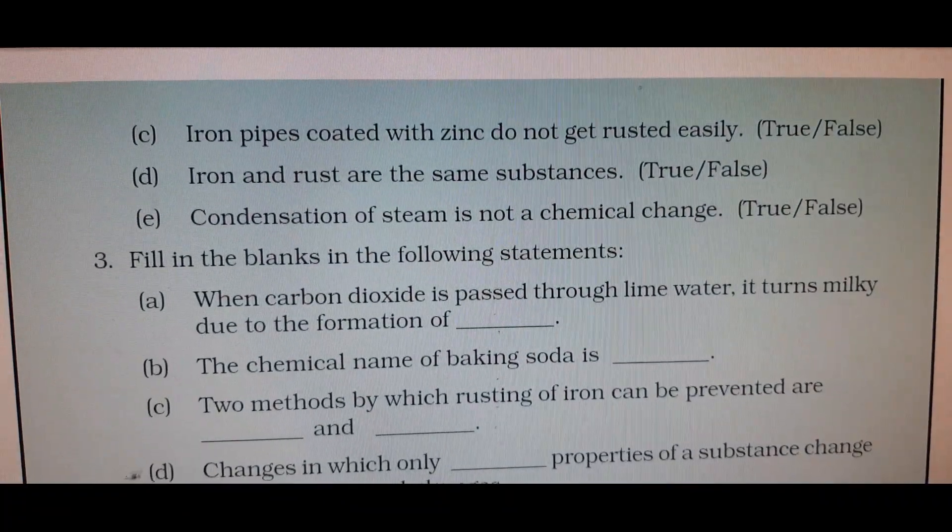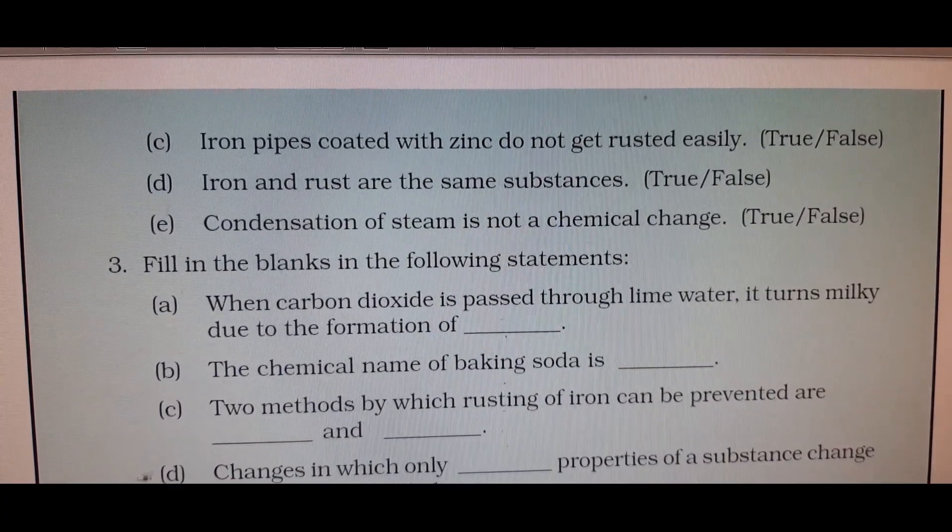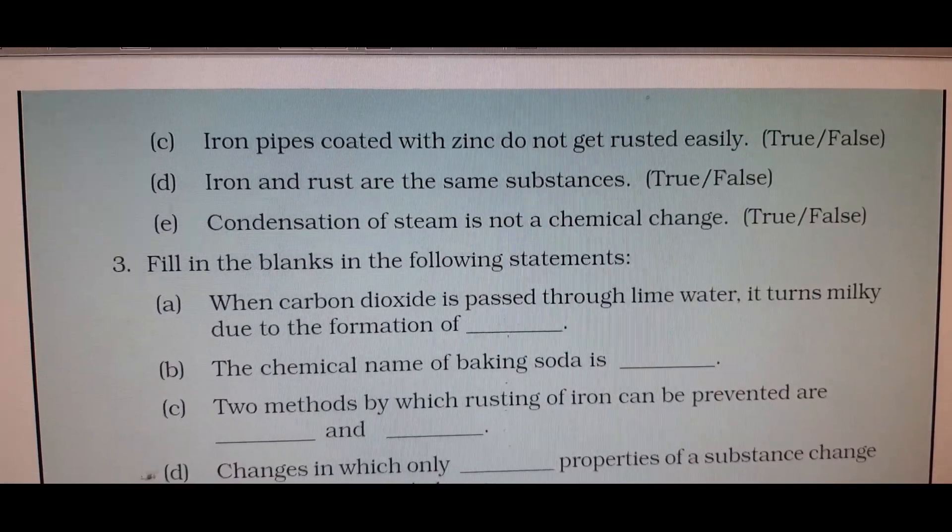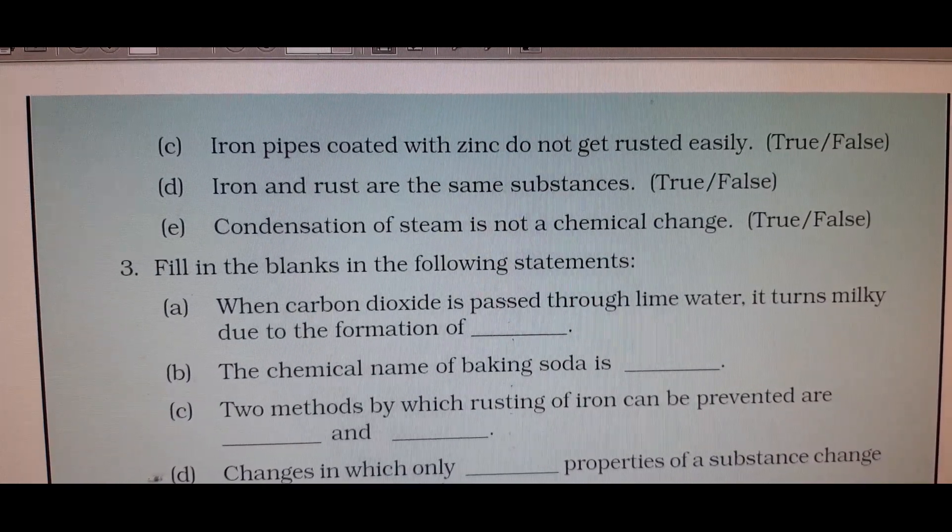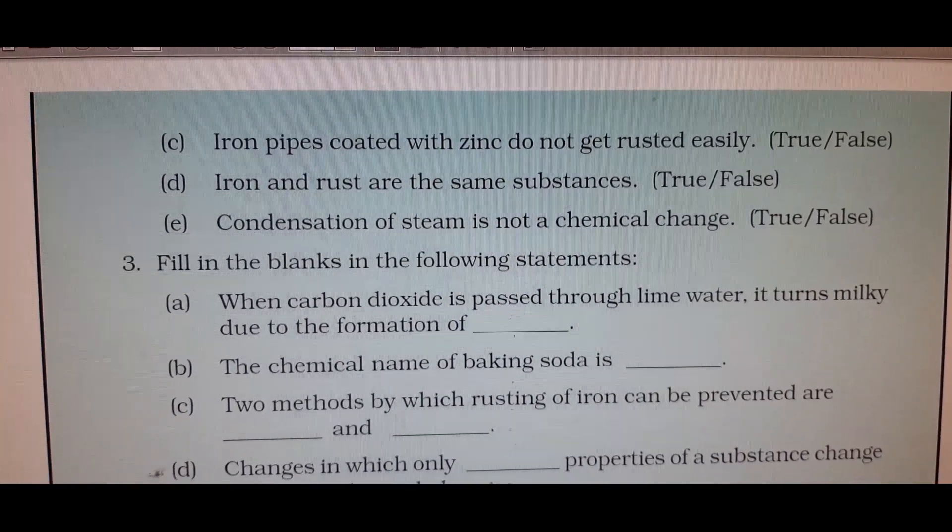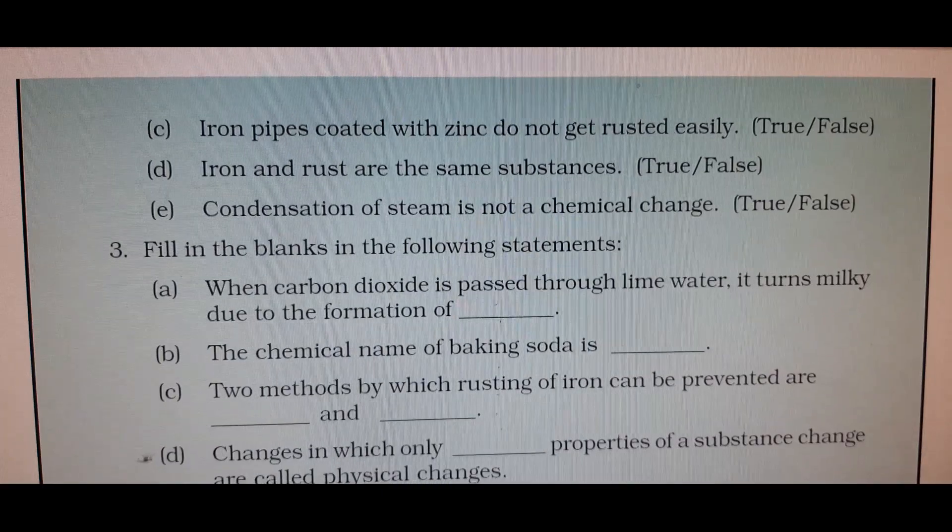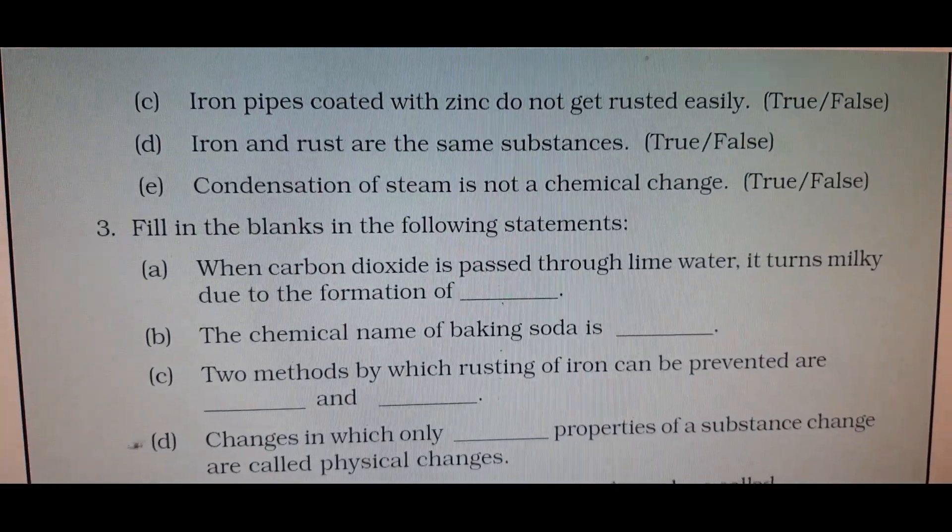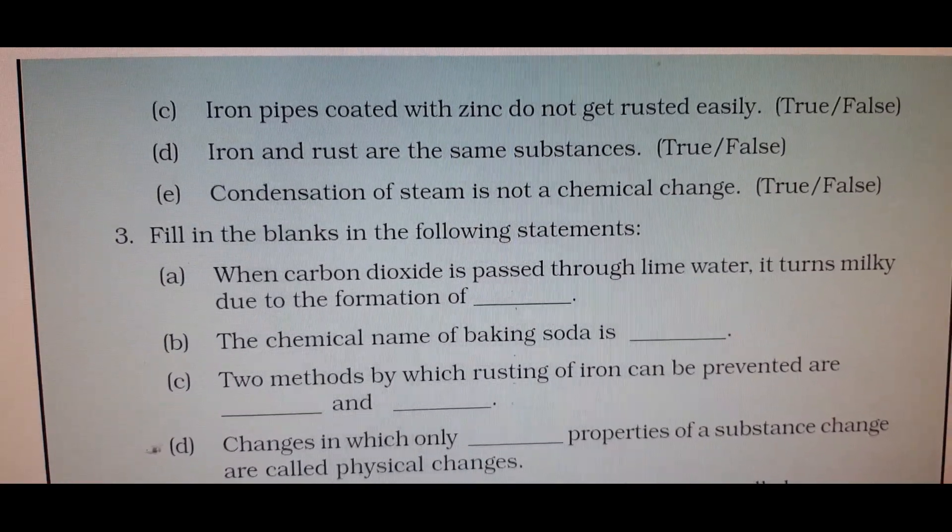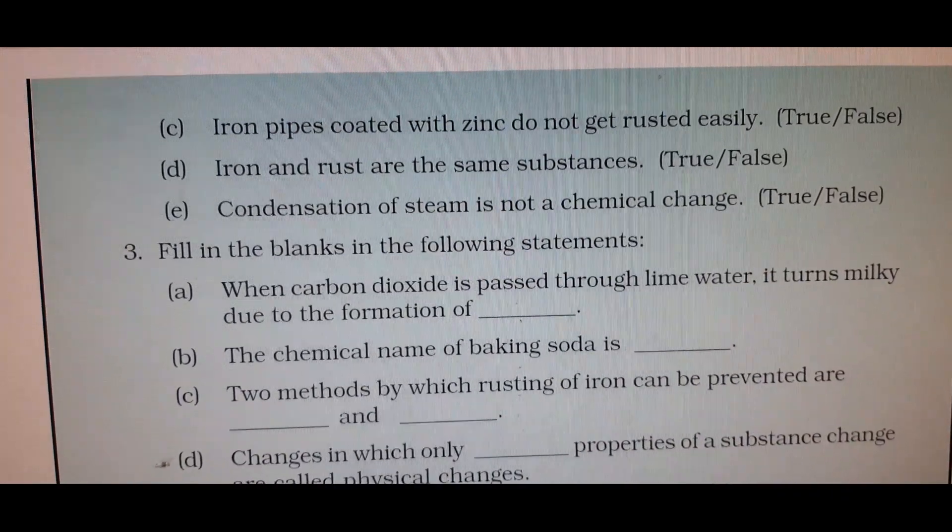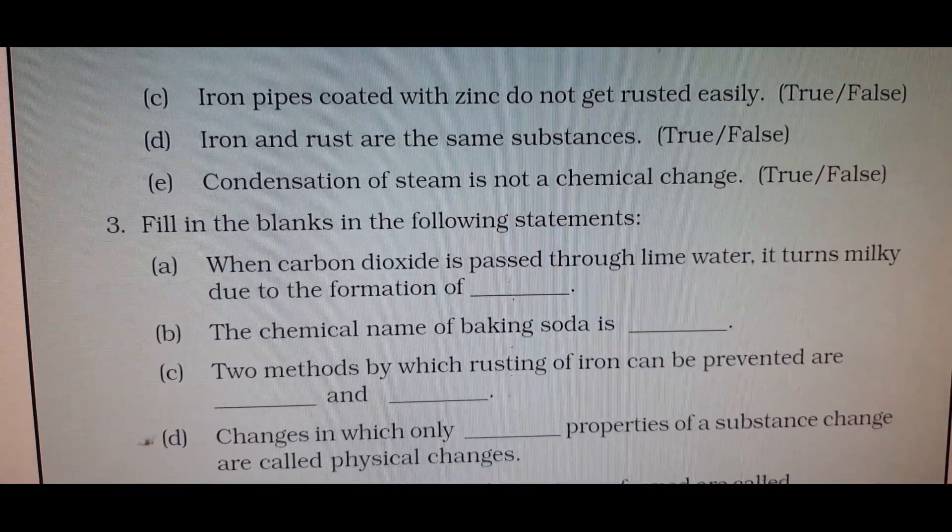Iron pipes coated with zinc do not get rusted easily. It is true. Iron and rust are the same substance. It is false. Iron and rust are different. Rust is iron oxide, formed by the reaction between iron, water and oxygen. They are not the same substance. Iron is gray in color and rust is brown in color. Condensation of steam is not a chemical change. It is true. Condensation of steam is a physical change.